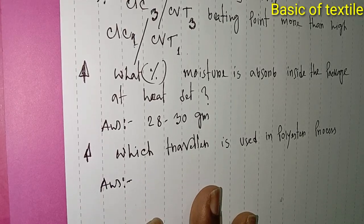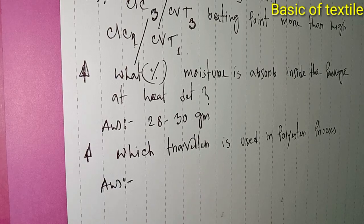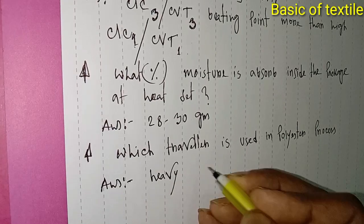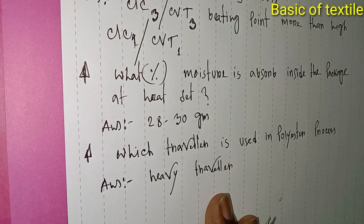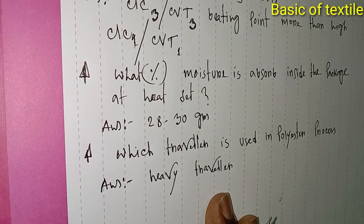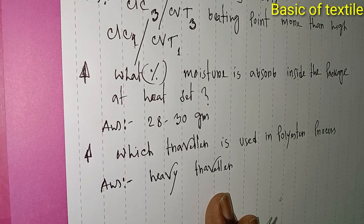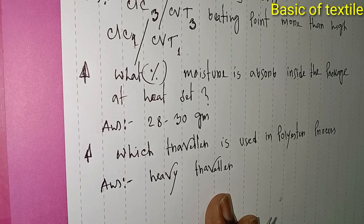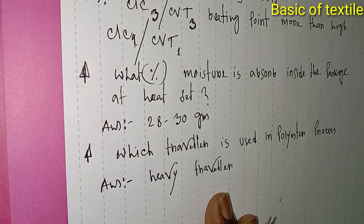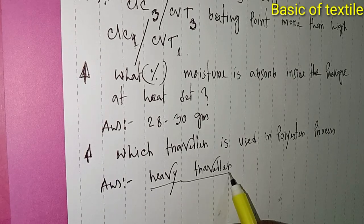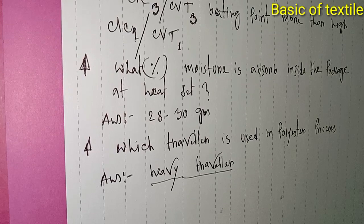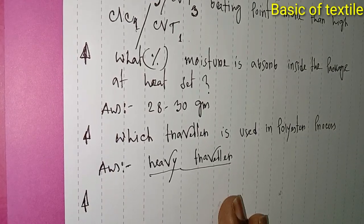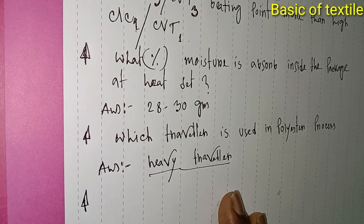Which traveler is used in polyester process? Heavy traveler or light traveler? Heavy traveler is used in polyester blends like 65-35 blends. The polyester content determines whether heavy or light traveler is appropriate. Heavy traveler provides better quality while light traveler is used for different yarn specifications.